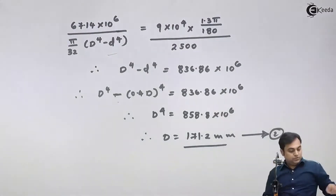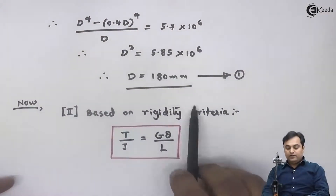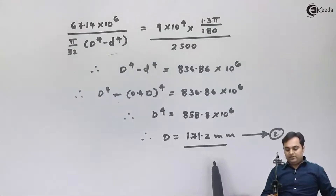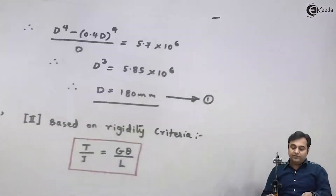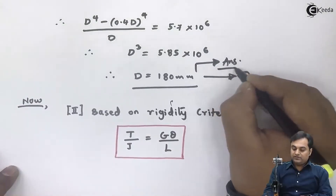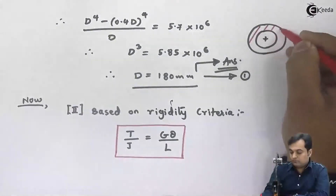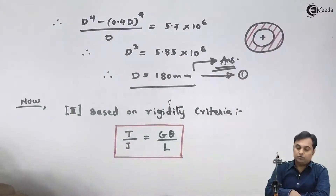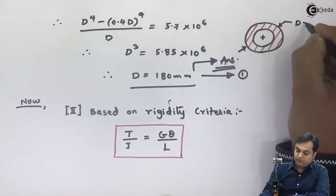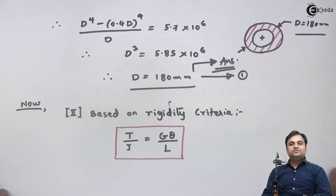Comparing equation 1 and equation 2: based on strength criteria the diameter is 180 mm, and based on rigidity criteria it is 171.2 mm. Out of both, we select the maximum value, which is 180 mm. So the external diameter of the hollow shaft is 180 mm, and with this we complete the question.